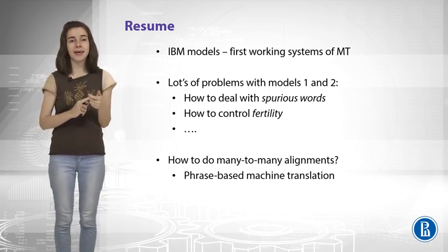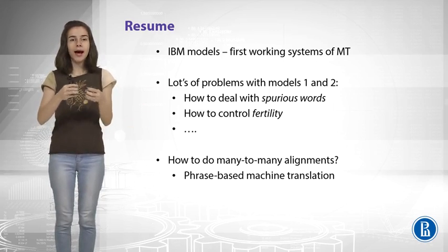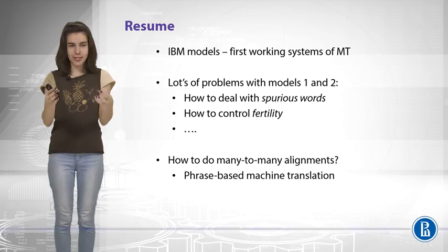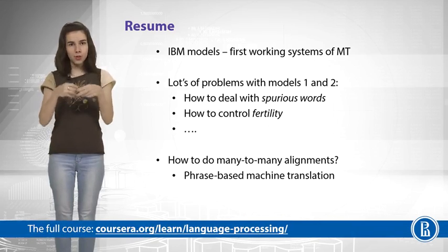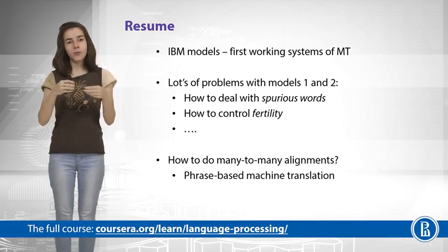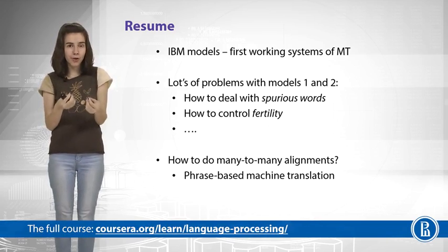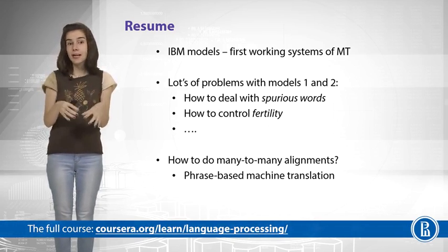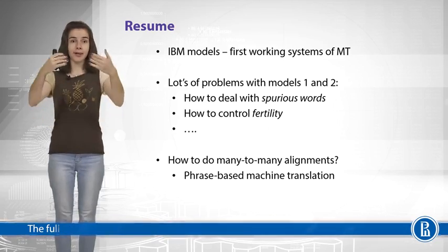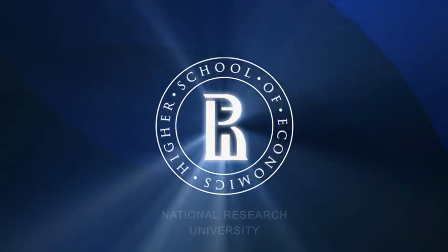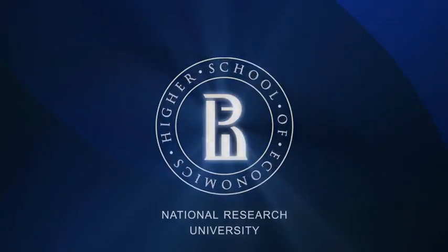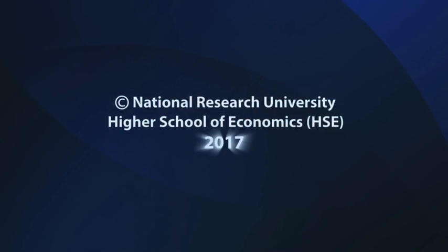And there are IBM model number 3 and 4 and 5 that can try to cope with the problem of fertility. For example, saying that we need to explicitly model how many output words are produced by each source word. Or that we need to explicitly deal with spurious words. These are the words that just appear from nowhere in the target language.